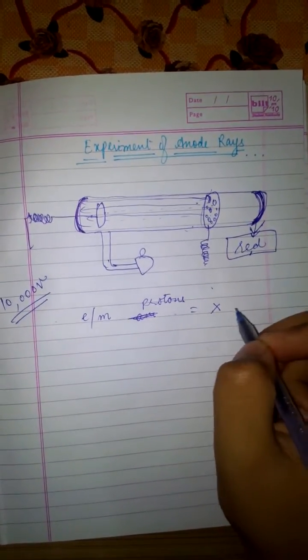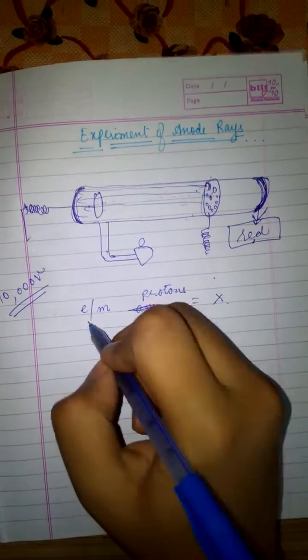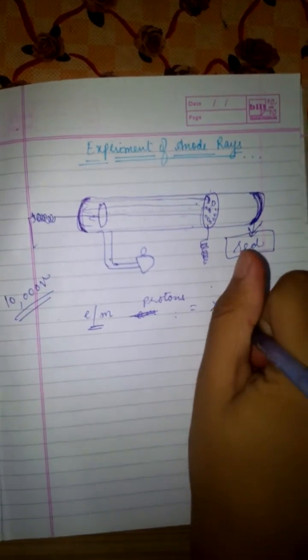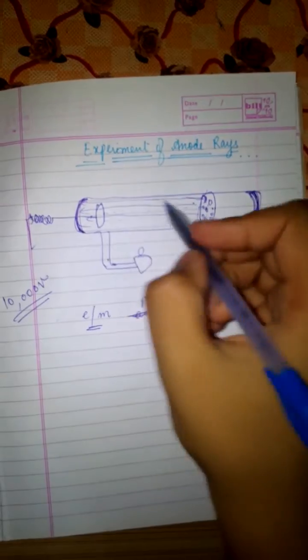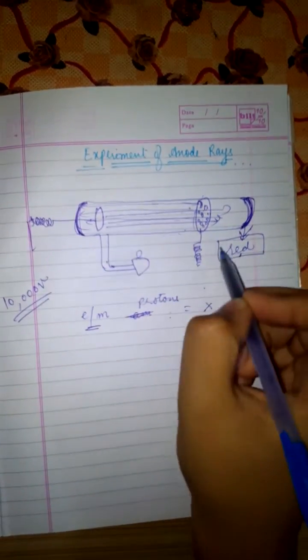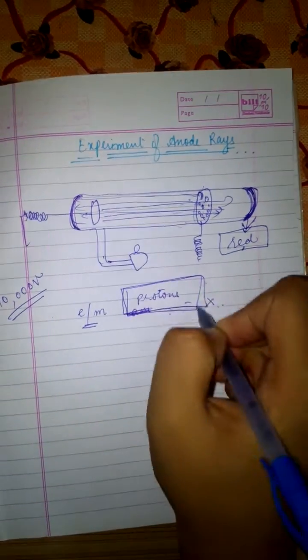Whereas the charge by mass ratio of electrons was same for cathode rays. So the particles of the anode rays, Sir Yogan Goldstein named them protons.